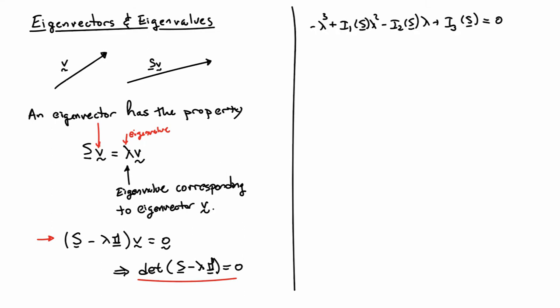If I expand that out, what I'm going to get is a third order polynomial in lambda. So the first coefficient is minus one. The second one is I1. Next one is minus I2. And the third one is I3. Those are known as the principal invariants of s. So the coefficients depend on s.